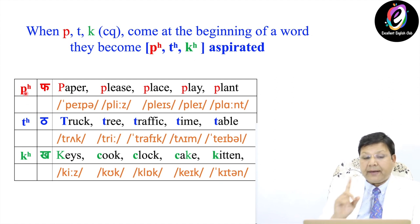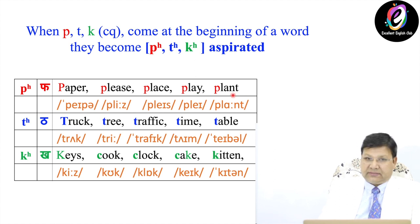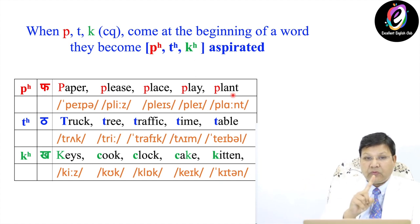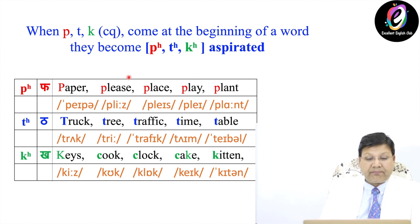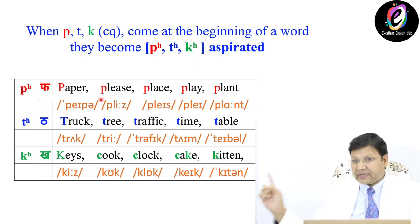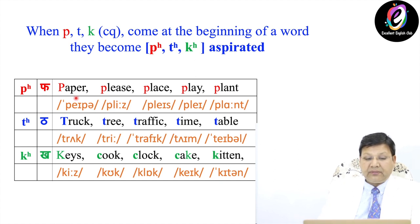Look at this table. The first sound is Pa — in paper, place, play, plant — everywhere I am saying Pha, Pha, Pha, not Pa, Pa, Pa. Why? Because the Pa sound is coming at the beginning. I have put it in red color so you can easily understand that Pa is coming at the beginning. And in orange color, this is the pronunciation of these words: paper, place, play, plant.